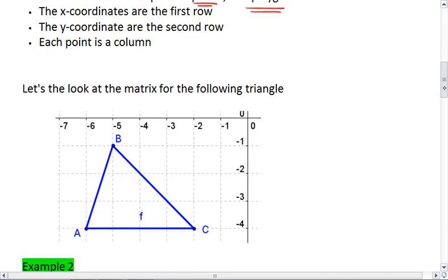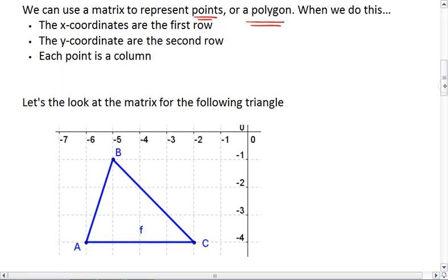Let's look at an example. So, we're going to come up with a matrix for this triangle. Here I have A, which is the point negative 6, negative 4. B is negative 5, negative 1, and C is negative 2, negative 4.